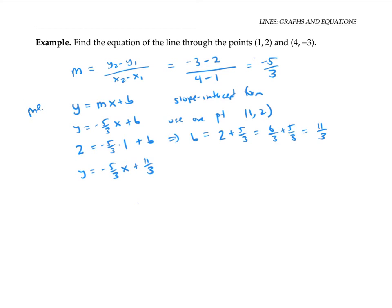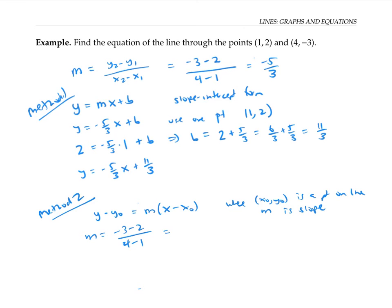This is method one. Method two uses a slightly different form of the equation. It's called the point slope form. And it goes y minus y naught is equal to m times x minus x naught, where x naught, y naught is a point on the line. And m again is the slope. So we calculate the slope the same way by taking a difference in y values over a difference in x values.